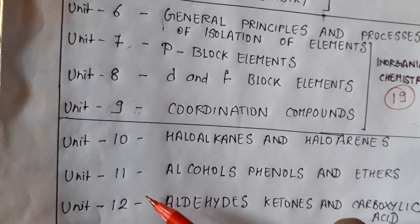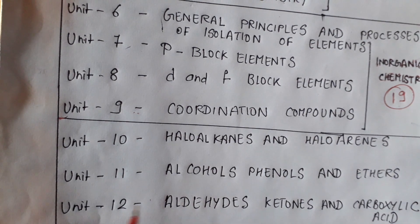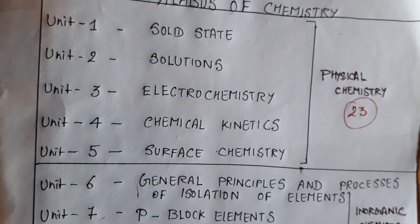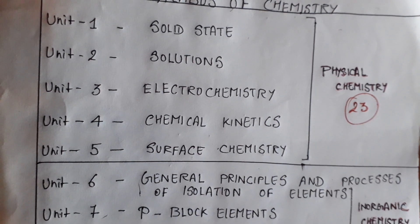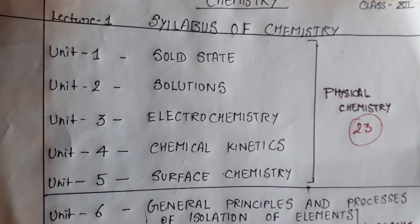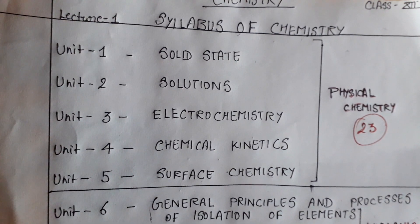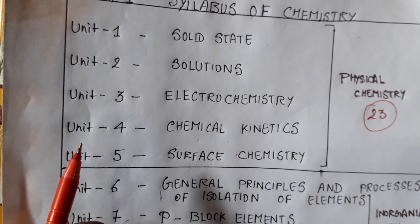That means we have to study a total of 16 units in chemistry. We know that chemistry is divided into 3 parts: physical chemistry, inorganic chemistry, and organic chemistry.